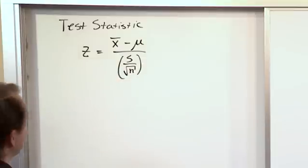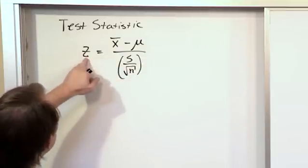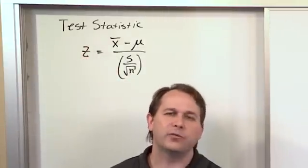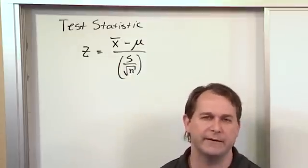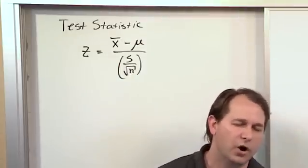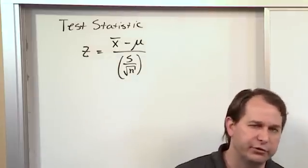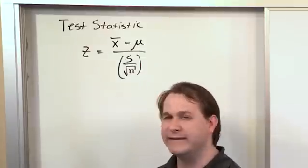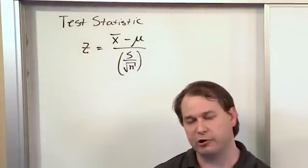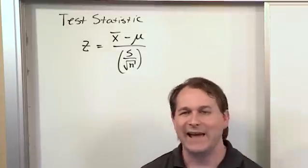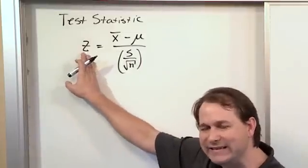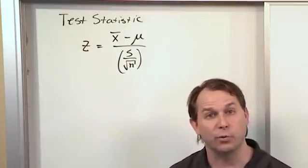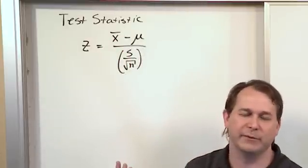This is basically exactly the same thing as before — the only change is instead of calling it t, we call it z. That's why we introduced the t distribution first when we talk about hypothesis testing: I could cover all the details, and you became comfortable using it. Now for large samples, we're doing exactly the same thing except using a normal distribution. So the chart in your book will be the normal distribution, and the test statistic is z, not t.